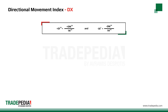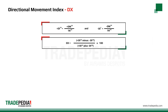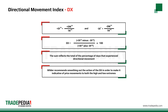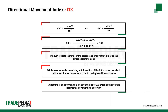But one day of directional movement does not make a trend. That is why Wilder recommended 14 periods to calculate the directional indicator. All of these calculations result in an indicator called the Directional Movement Index, DX, that measures the difference between the two DI's. The sum reflects the total of the percentage of days that experienced directional movement. Wilder recommends smoothing out the action of the DX in order to make it indicative of price movements to both the high and low extremes. Smoothing is done by taking a 14-day average of DX, creating the Average Directional Movement Index, or ADX.